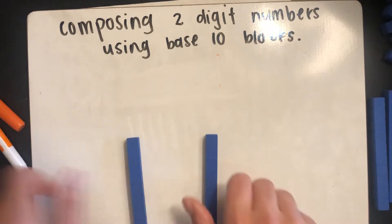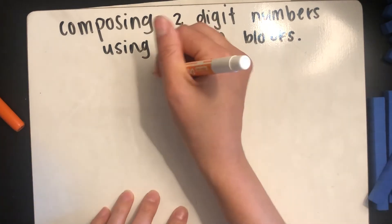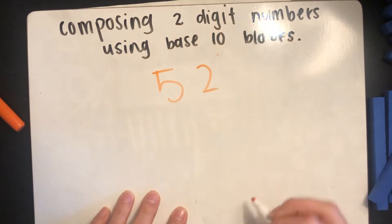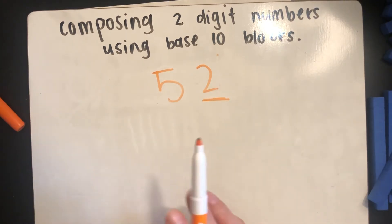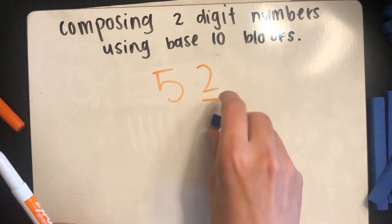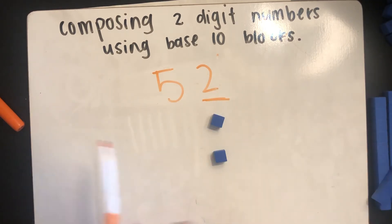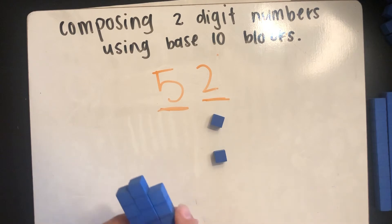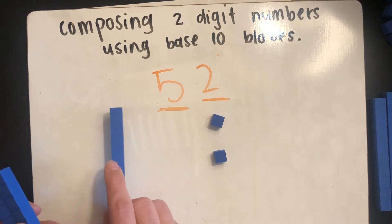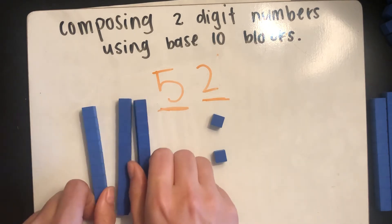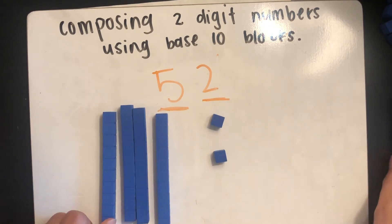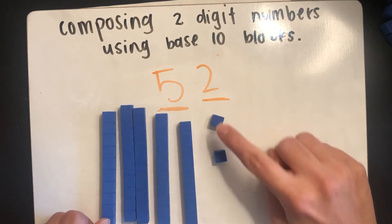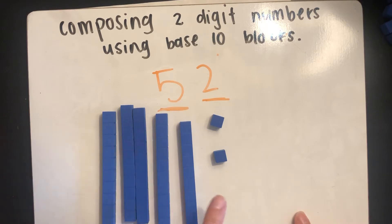Let's take another example. Let's do the number 52. We see that we have the number two in the ones place, so we need two ones cubes. Then we have the number five in the tens place, so we need five 10 sticks. Now we can count by 10 as we put the 10 sticks down to get to 50, then build 52: 10, 20, 30, 40, 50, 51, 52. We just built the number 52 using 10 sticks and ones cubes.